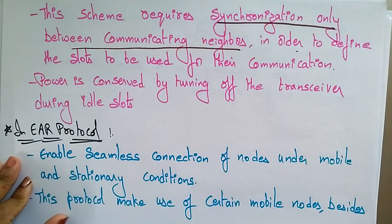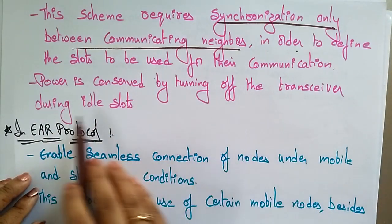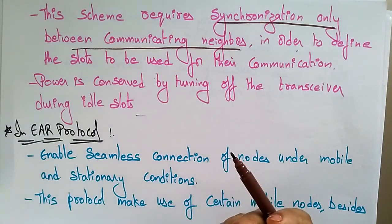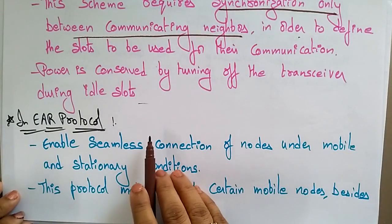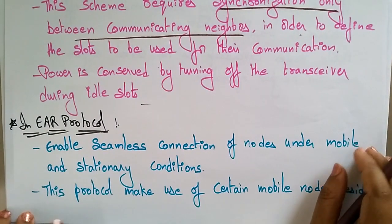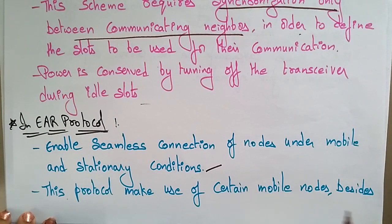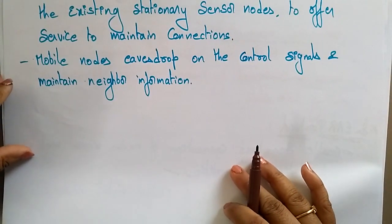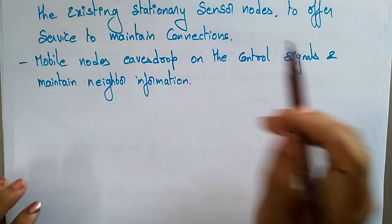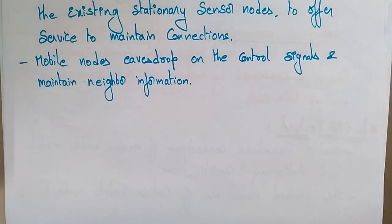The SMACS scheme requires synchronization only between communicating neighbors in order to define the slots used for their communication — that is, allotting time slots to the sensors. Power is conserved by turning off the transceivers during idle slots. The EAR protocol enables seamless connections of nodes under mobile and stationary conditions, making use of mobile nodes to maintain connections. Mobile nodes eavesdrop on control signals and maintain neighbor information.